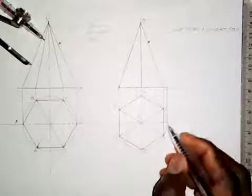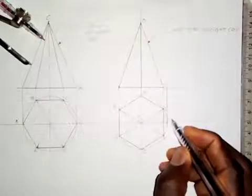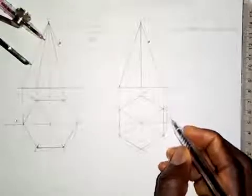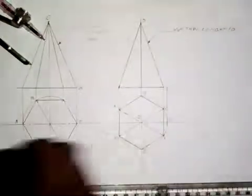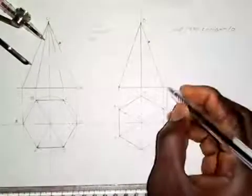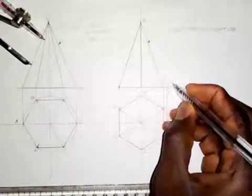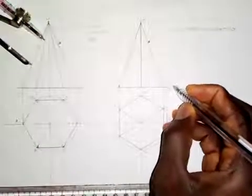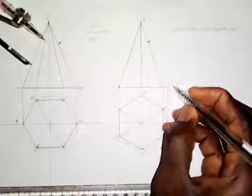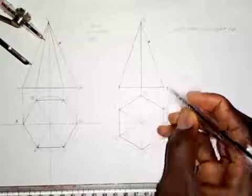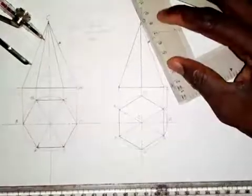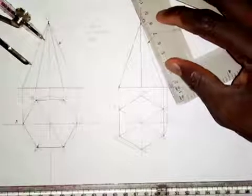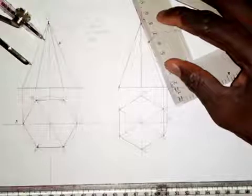I can call this point D1. Then coming up here, we have this to be point Y1. Where the vertical line that we drew touches this horizontal line, we call it Y1. Then I'm going to join O to Y1 together like this.